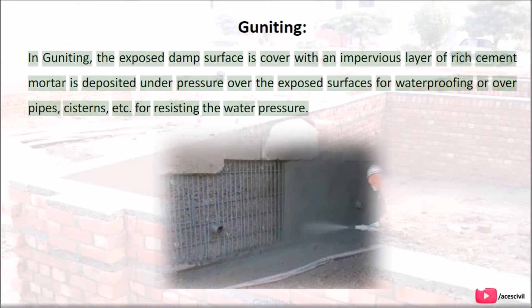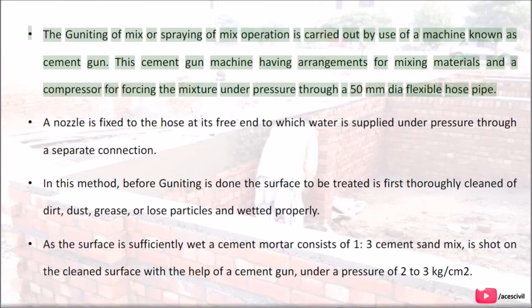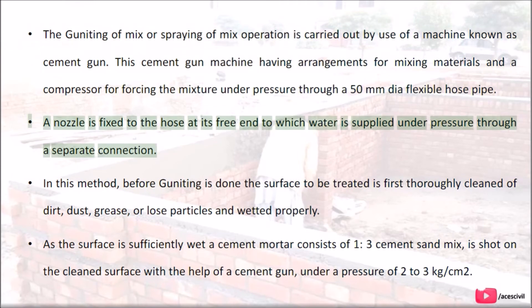In guniting, the exposed damp surfaces are covered with an impervious layer of rich cement mortar deposited under pressure over the surfaces for waterproofing, or over pipes, cisterns, etc., for resisting water pressure. The guniting operation is carried out using a machine known as a cement gun. This machine has arrangements for mixing materials and a compressor for forcing the mixture under pressure through a 50 mm diameter flexible hose pipe. A nozzle fixed to the free end of the hose is supplied with water under pressure through a separate connection.